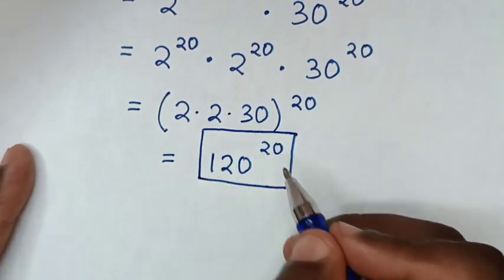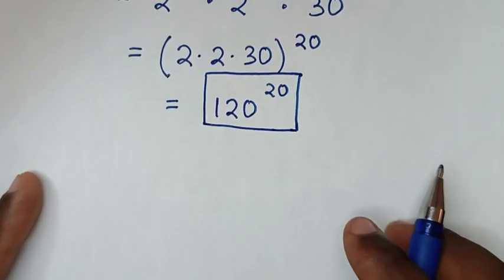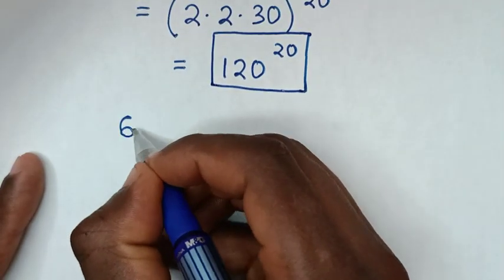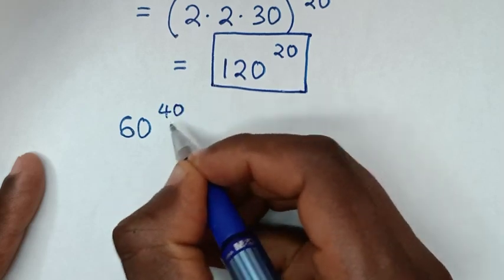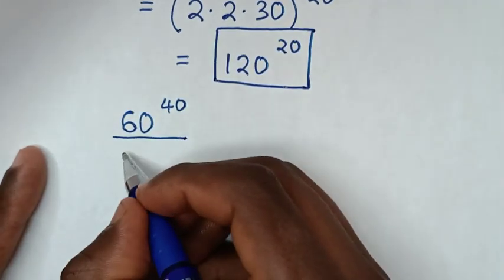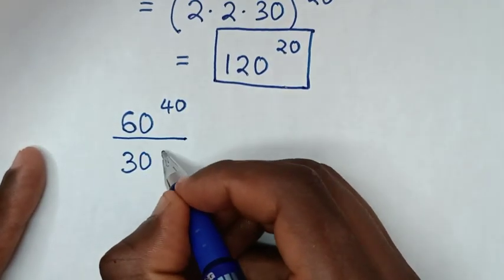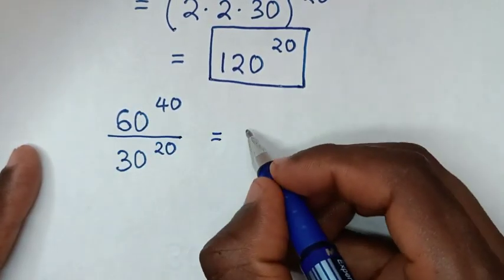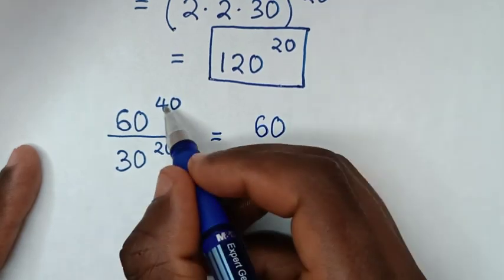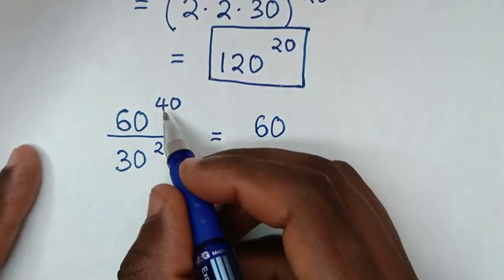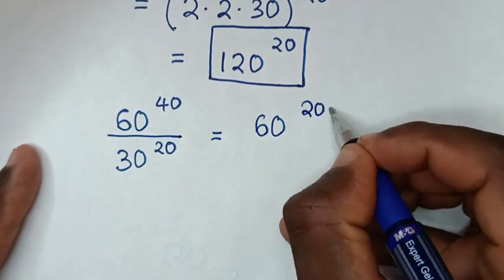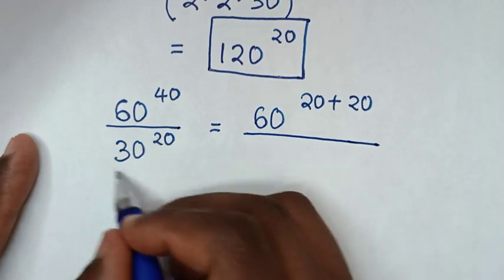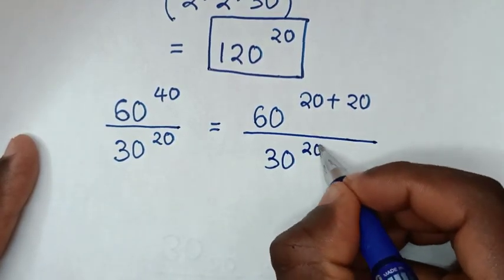Or to solve using another method from our problem, which is 60 power of 40 over 30 power of 20. We rewrite 60 power of 40 to have a common power of 20, so 40 is the same as 20 plus 20, then over the exponent 30 power of 20.